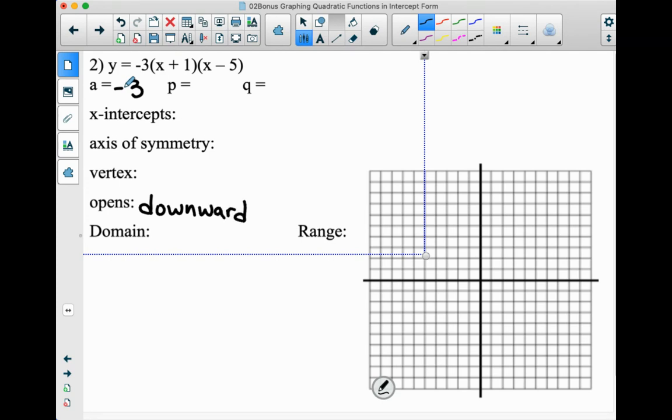Anytime A is negative, it's going to open downward. P, it says plus 1, so our P will be negative 1. And then the Q, mind your P's and Q's, it says X minus 5, so that would be positive 5.